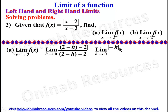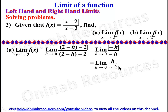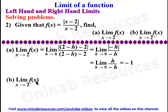Since the absolute value of negative h returns the positive value h, we have limit as h approaches 0 of h over −h, which gives −1. So the left-hand limit is −1.